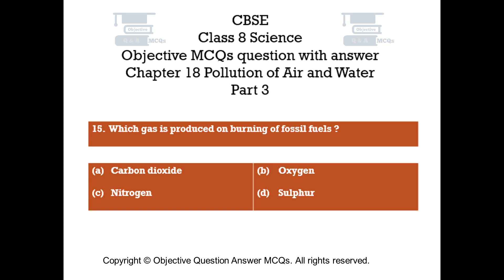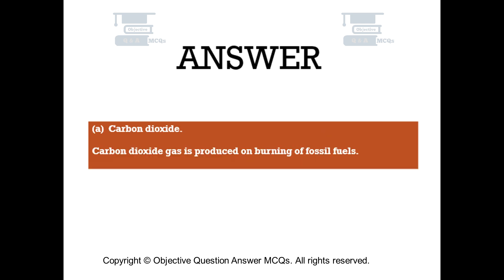Question number 15: Which gas is produced on burning of fossil fuels? Option A: carbon dioxide, Option B: oxygen, Option C: nitrogen, Option D: sulfur. The right answer is Option A: carbon dioxide. Carbon dioxide gas is produced on burning of fossil fuels.